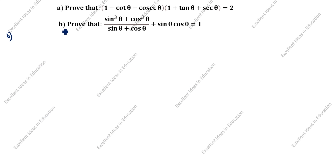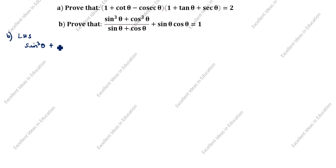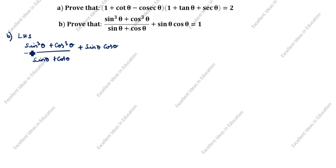Next, question B. What is given? Prove that (sin³θ + cos³θ)/(sin θ + cos θ) + sin θ cos θ = 1. We will prove LHS equal to RHS. What is given LHS? sin³θ + cos³θ divided by sin θ + cos θ, plus sin θ cos θ.